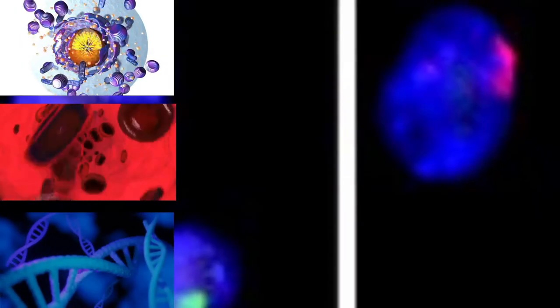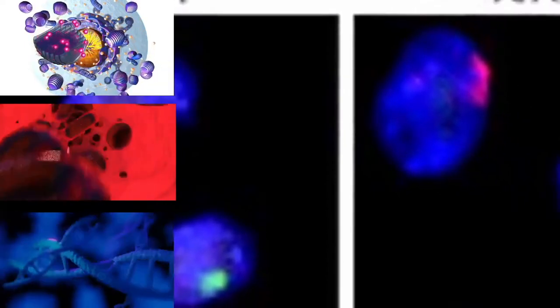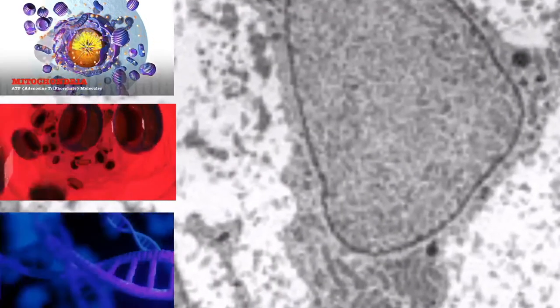Archaeplastida, or Primoplantae: land plants, green algae, red algae, and glaucophytes. SAR supergroup: Stramenopiles, brown algae, diatoms, etc., Alveolata, and Rhizaria, foraminifera, radiolaria, and various other amoeboid protozoa. Excavata: various flagellate protozoa. Amoebozoa: most lobose amoeboids and slime molds. Opisthokonta: animals, fungi, choanoflagellates, etc.